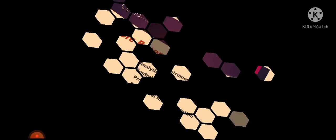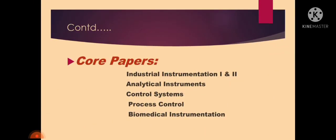The last comes their core papers, their department-oriented papers. The EIE or ICE students will be studying these core papers starting from their third year, fifth semester. Some of the core papers are Industrial Instrumentation 1 and 2, Analytical Instruments, Control Systems, Process Control, and Biomedical Instrumentation.